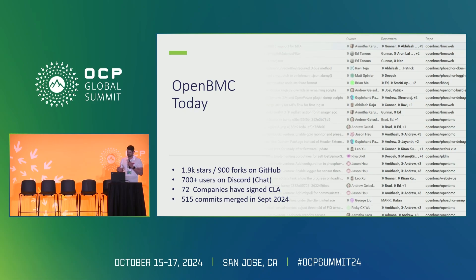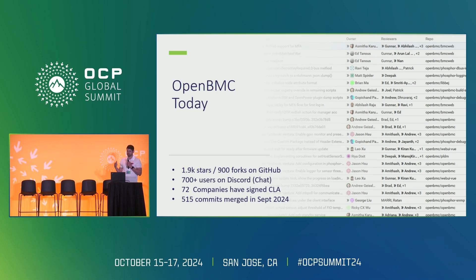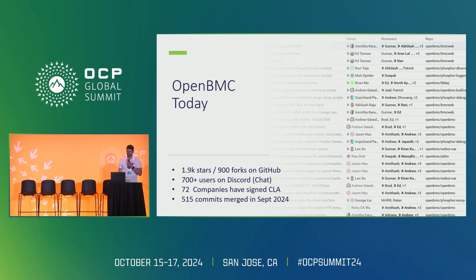OpenBMC today. OpenBMC has grown rapidly since its initial founding and becoming a Linux Foundation project in 2018. Today there are 900-plus forks of OpenBMC, 700 users on Discord which we use for chat. We require a contributing license agreement, and 72 companies have signed a corporate CLA, plus dozens of individual CLA signers. In September there were 515 commits merged, and that's a pretty typical month.